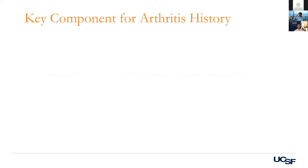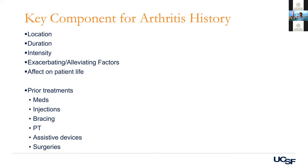For the history, you want to know the onset of their pain, its characteristics, how long it's been going on, and what activities it prevents them from doing. Ask what they've done for the pain — NSAIDs, injections, prior surgery. Location, duration, intensity, what makes it worse, and how it's affecting their life. I like to ask: if your knee wasn't bothering you, what activities would you be doing? That gets at their expectations. Also document prior treatments: medications, injections, bracing, and therapy.